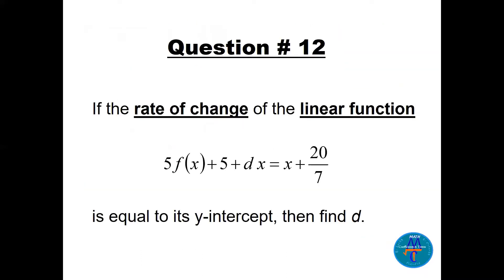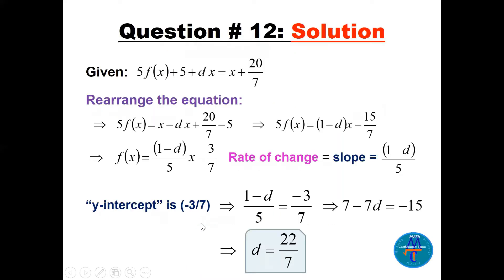Question number 12: find the rate of change and the y-intercept of the linear function, and find the value of d. This is a linear function not arranged at all, so you have to rearrange it. Remember, the rate of change is the slope, and the y-intercept is found by putting x equals 0.